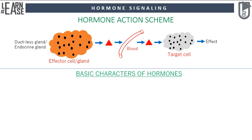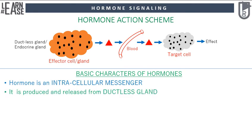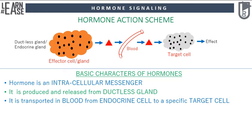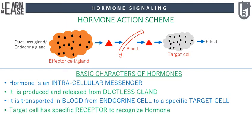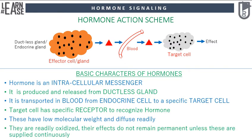Now I will provide basic characteristics of hormones. A hormone is an intracellular messenger. It is produced and released from a ductless gland. It is transported in blood from an endocrine cell to a specific target cell, and the target cell has a specific receptor to recognize the hormone. Hormones have low molecular weight and diffuse readily. They are readily oxidized, and their effects do not remain permanent unless they are supplied continuously.